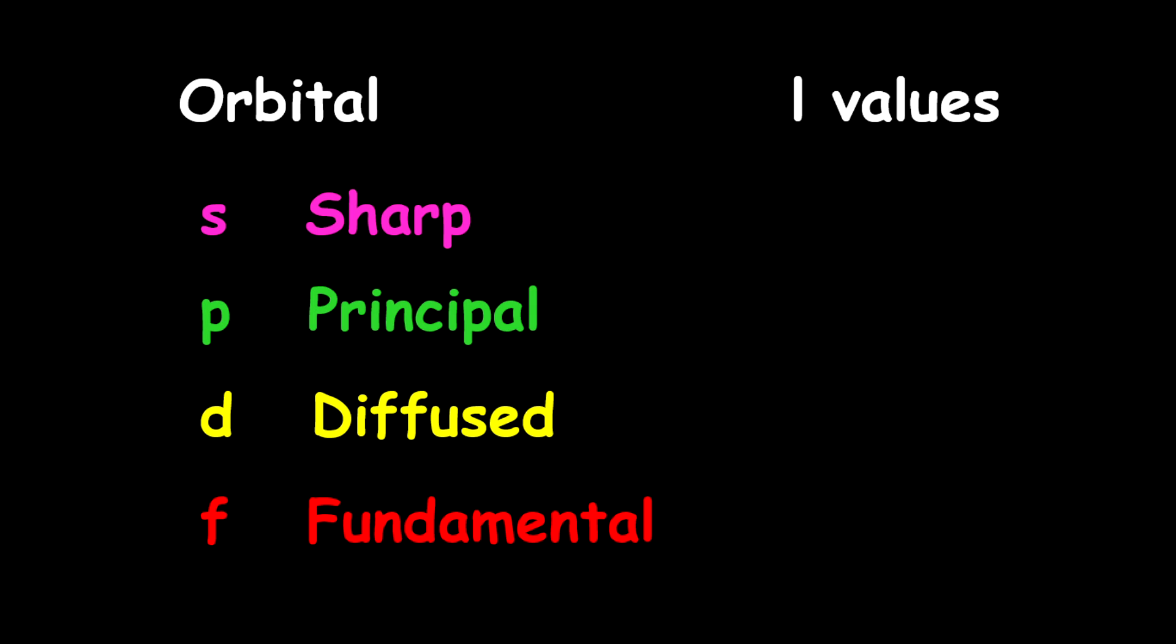For the specific orbital, the S orbital is called sharp, the P orbital is called principal, the D orbital is called diffused, while the F orbital is called fundamental.